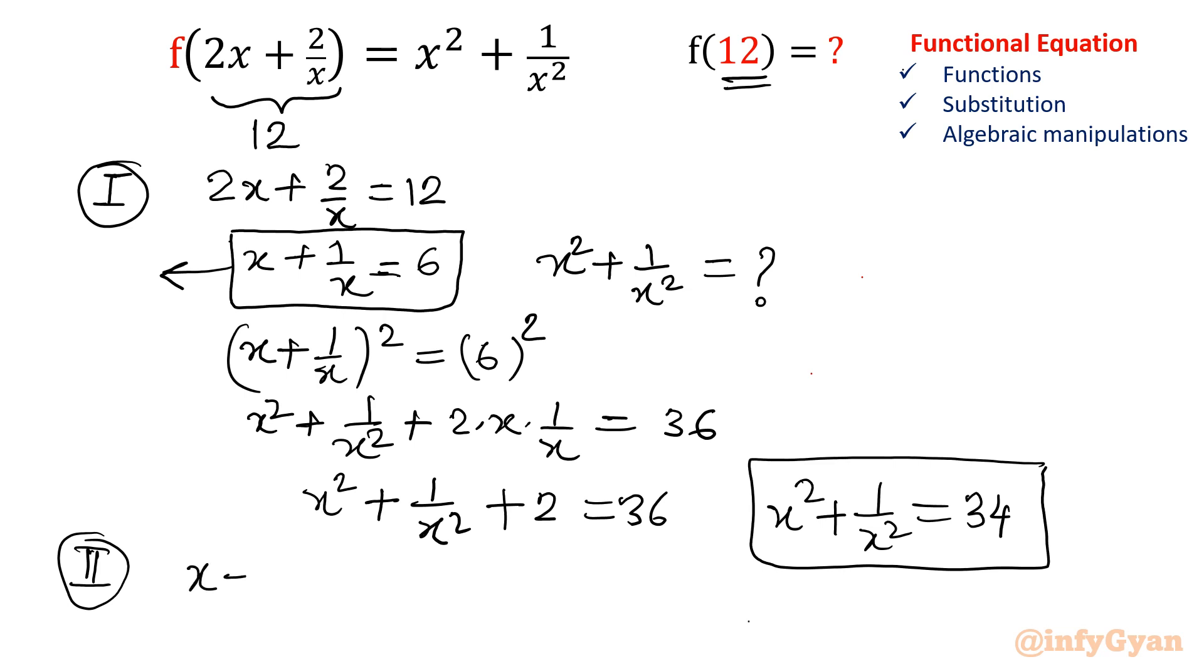x + 1/x = 6. Make it quadratic equation, multiply both sides by x. So equation will be x² + 1 = 6x, or in other words x² - 6x + 1 = 0.